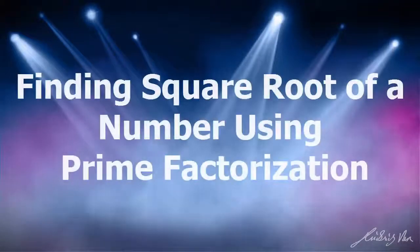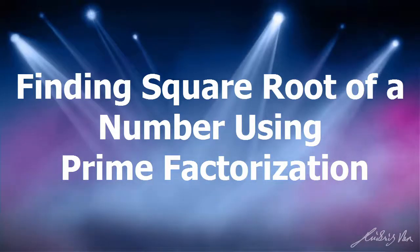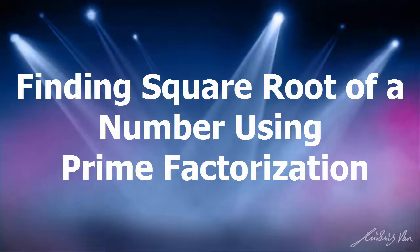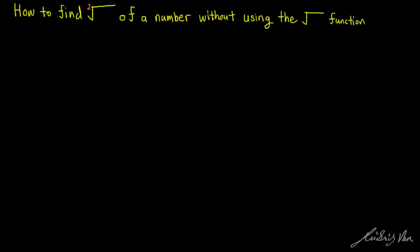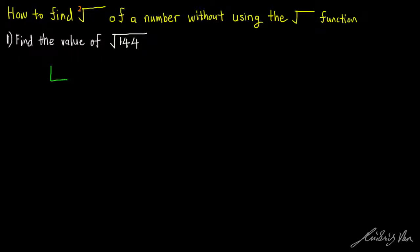Hello everyone, this is Mr. Nice Guy and in this video you will learn how to find the square root of a number without using the square root function of your calculator. So essentially what we need to do is to prime factorize the number which we are given. For example, a question will be something like: find the value of square root of 144. So what we have to do is to prime factorize 144.